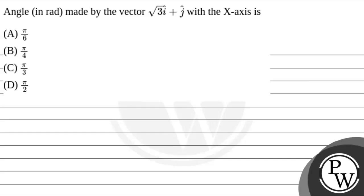Hello, let's get out the question. The question says: the angle made by the vector √3 î + ĵ with the x-axis is?